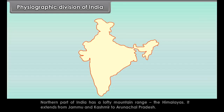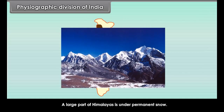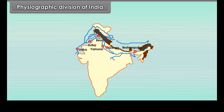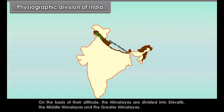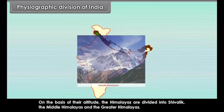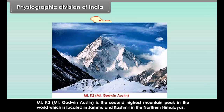Physiographic Division of India. When we talk about India, we have diversified physical features. The northern part of India has a lofty mountain range — the Himalayas. It extends from Jammu and Kashmir to Arunachal Pradesh. A large part of the Himalayas is under permanent snow. The Himalayas are the source of many rivers flowing in India. On the basis of their altitude, the Himalayas are divided into Shivalik, the Middle Himalayas and the Greater Himalayas.